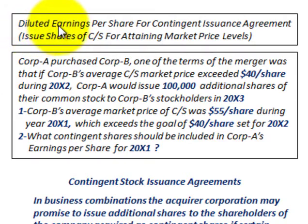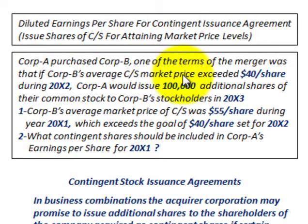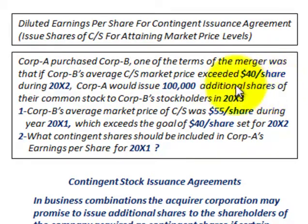We're going to be going over diluted earnings per share for contingent issuance agreements, where we issue shares of common stock for attaining a certain market price level. Corporation A purchased Corporation B, and one of the terms of the merger was that if Corporation B's average common stock market price exceeded $40 per share during year 20x2, Corporation A would issue an extra 100,000 additional shares of their common stock to Corporation B's stockholders in year 20x3.